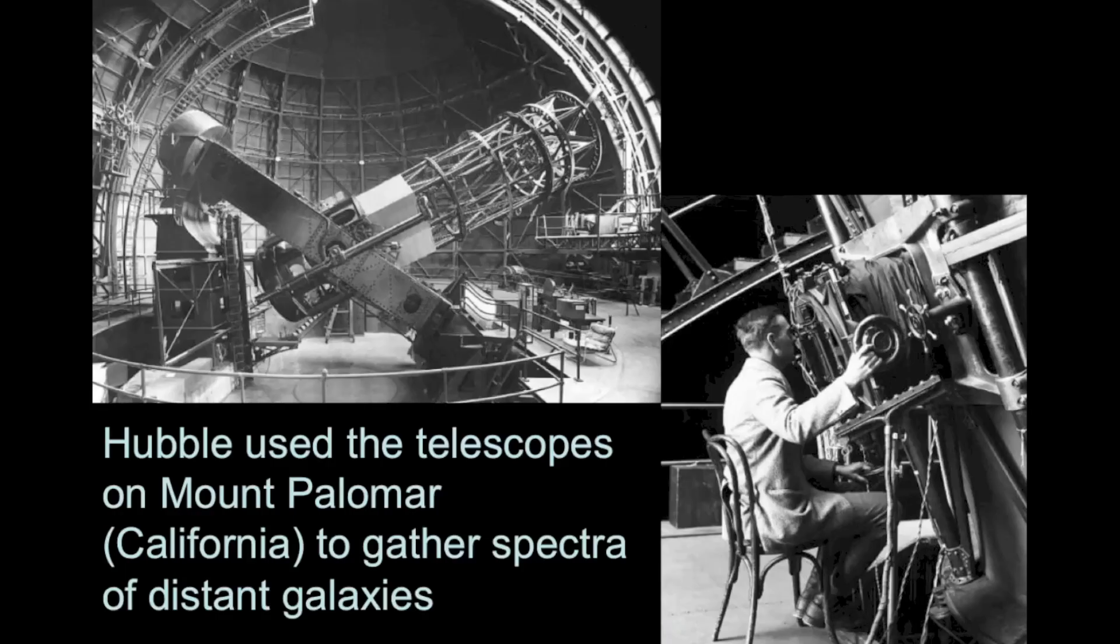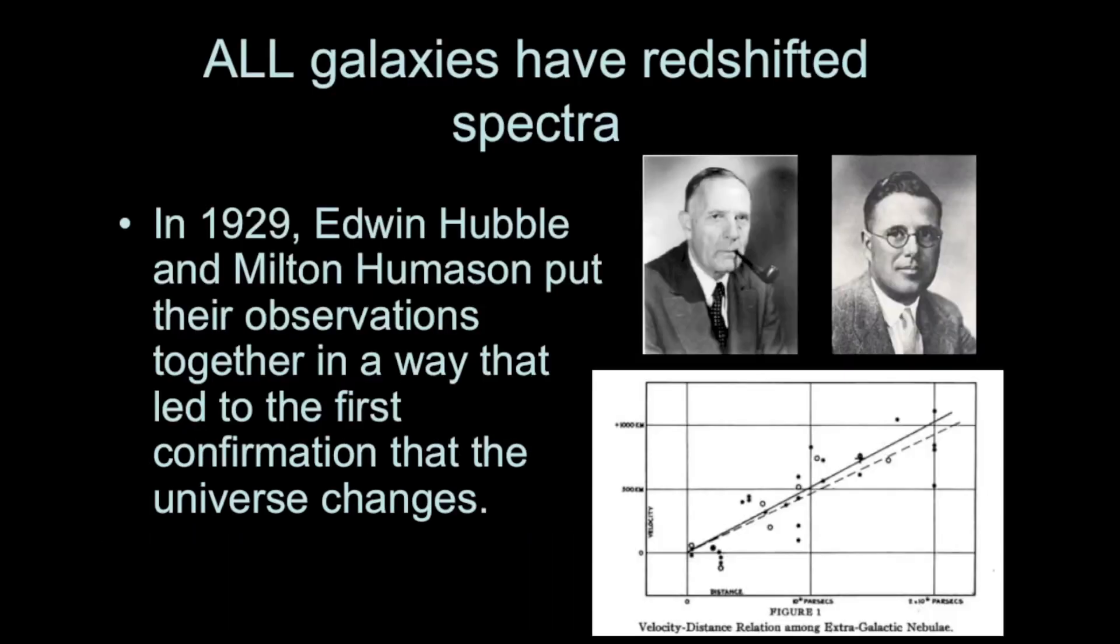That was determined by an American astronomer named Edwin Hubble, the astronomer who the Hubble Space Telescope is named after. He used, at the time, the biggest telescopes in the world to not only determine the distance to these galaxies, but also their spectra. What Hubble discovered is that the bigger the distance to a galaxy, the bigger the redshift, and thus the bigger the apparent velocity away.